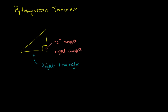Now, with the Pythagorean Theorem, if we know two sides of a right triangle, we can always figure out the third side. But before I show you how to do that, let me give you one more piece of terminology. The longest side of a right triangle is the side opposite the 90 degree angle, or opposite the right angle. That longest side is called the hypotenuse. It's good to know because we'll keep referring to it. Let me draw a couple more right triangles.